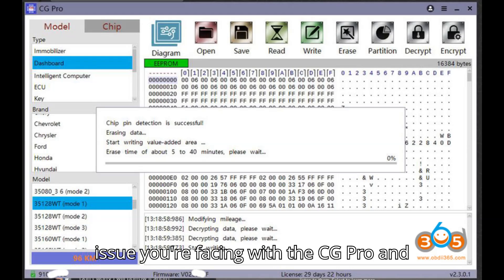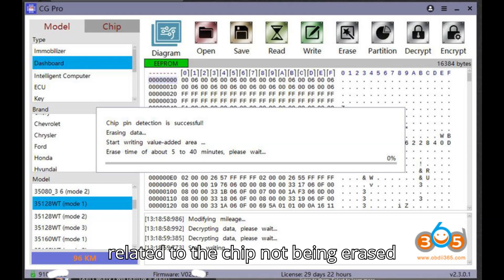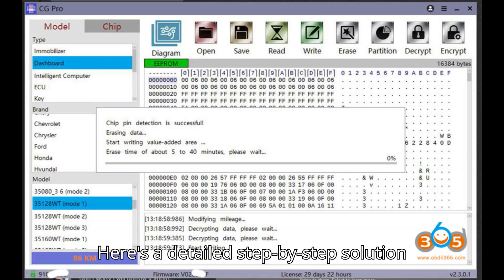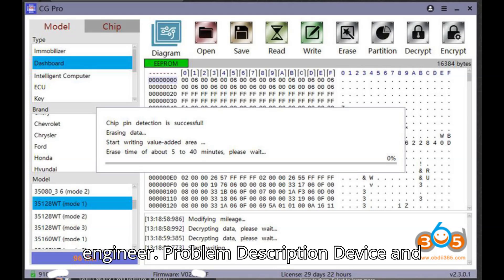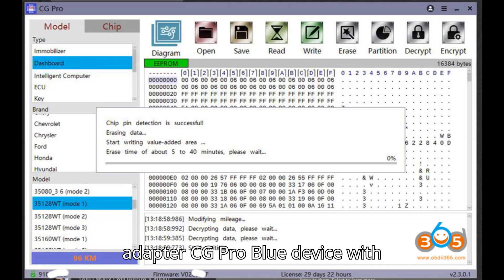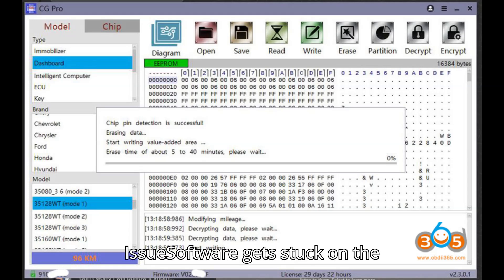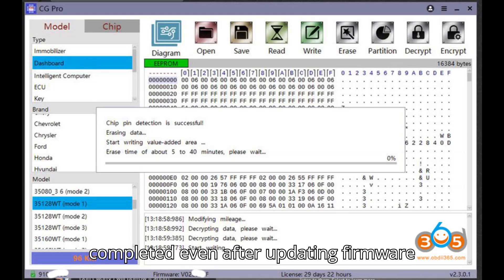The issue you're facing with the CG Pro and BMW 35128WT EEPROM is related to the chip not being erased properly during the writing process. Here's a detailed step-by-step solution based on the suggestion from the CGDI engineer. Problem description: CG Pro Blue Device with 35128WT Adapter. The software gets stuck on the decrypting page and writing cannot be completed even after updating firmware and software.